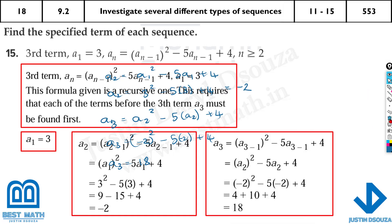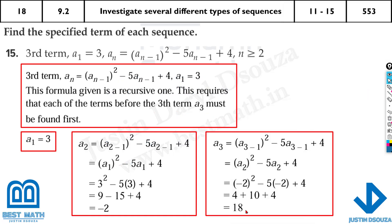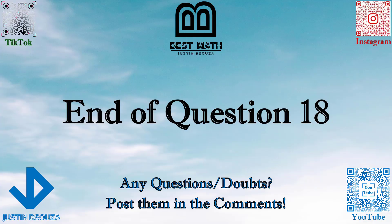They asked for A3, and that's the answer — 18. That is the end of this question. If you have any doubts, please re-watch the video or post your questions in the comments. Hope to see you in the next video.